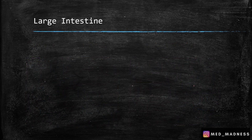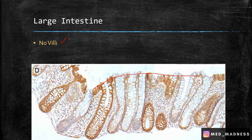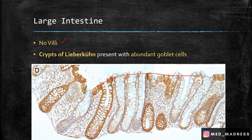Now the large intestine — some important features. How can you tell this is the large intestine? First, there is no villi; this is the most distinct feature of the large intestine. Number two: the crypts of Lieberkühn are present with abundant goblet cells. You can see the crypts of Lieberkühn here with abundant goblet cells — more in number when compared with the small intestine or the stomach.